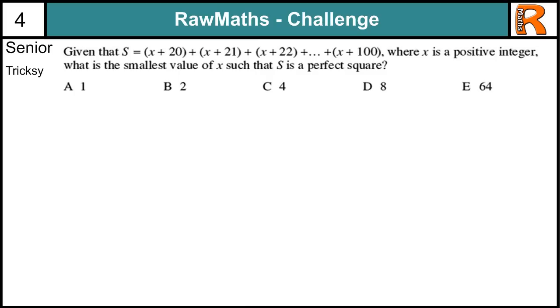Senior tricksy from RawMaths Challenge number 3. We've got to work out what's the smallest value of x such that S is a perfect square. So we've got this S which is the sum of a sequence. It's an arithmetic progression. Now we could use the formula for arithmetic progression. The sum to n to be equal to half n times a plus l. Well a is the first term and l is the last term. We don't really need that. Let's just try and do it without to start with. So if we look at this, how many x's have we got? Well we've got 1x for every term in the sequence. And the key thing here is to realise there's 81 terms. 20 to 100 is 81 because 21 to 100 would be 80. And the extra one makes 81. So we've got 81 x's. And then we've got the numbers 20 added up to 100.